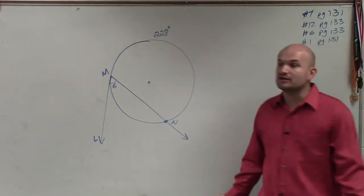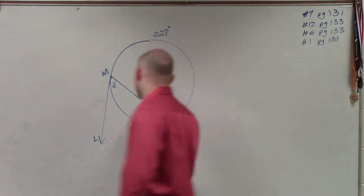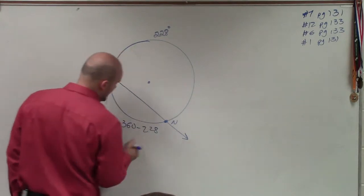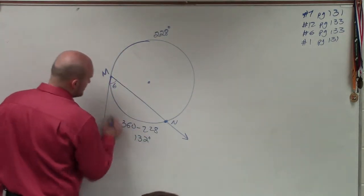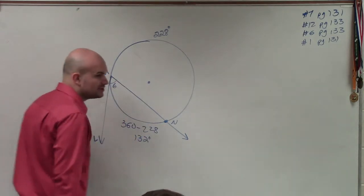So automatically, just figuring out this problem, I already know if this is 228, then this is going to be 360 minus 228, and that's going to equal 132 degrees. So the minor arc from here to here would be 132.